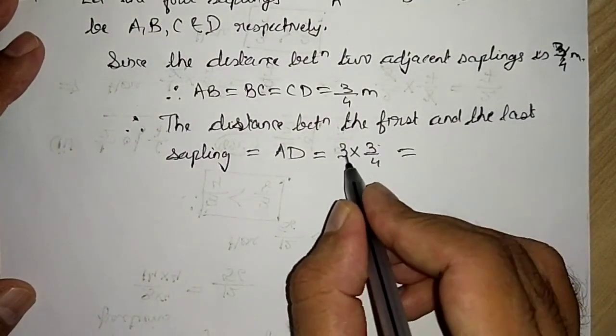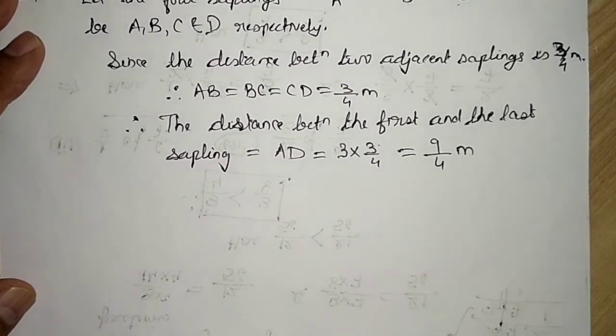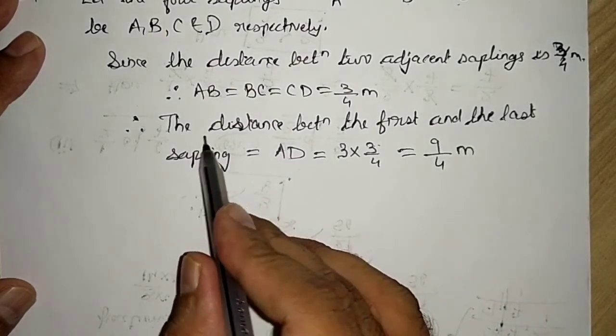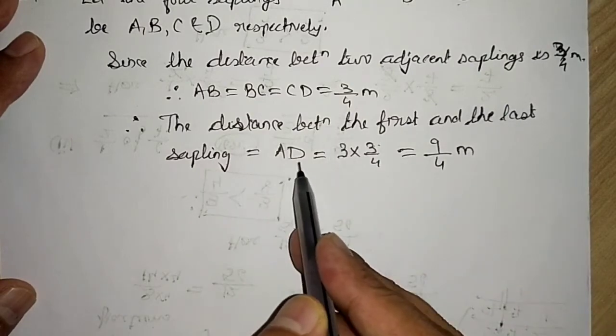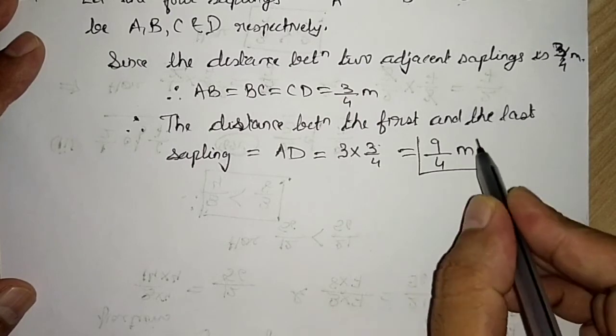So our answer will be 3, 3s are 9, divide by 4 meter. Therefore, the distance between the first and the last sapling is equal to AD is equal to 9 by 4 meter. This is our answer.